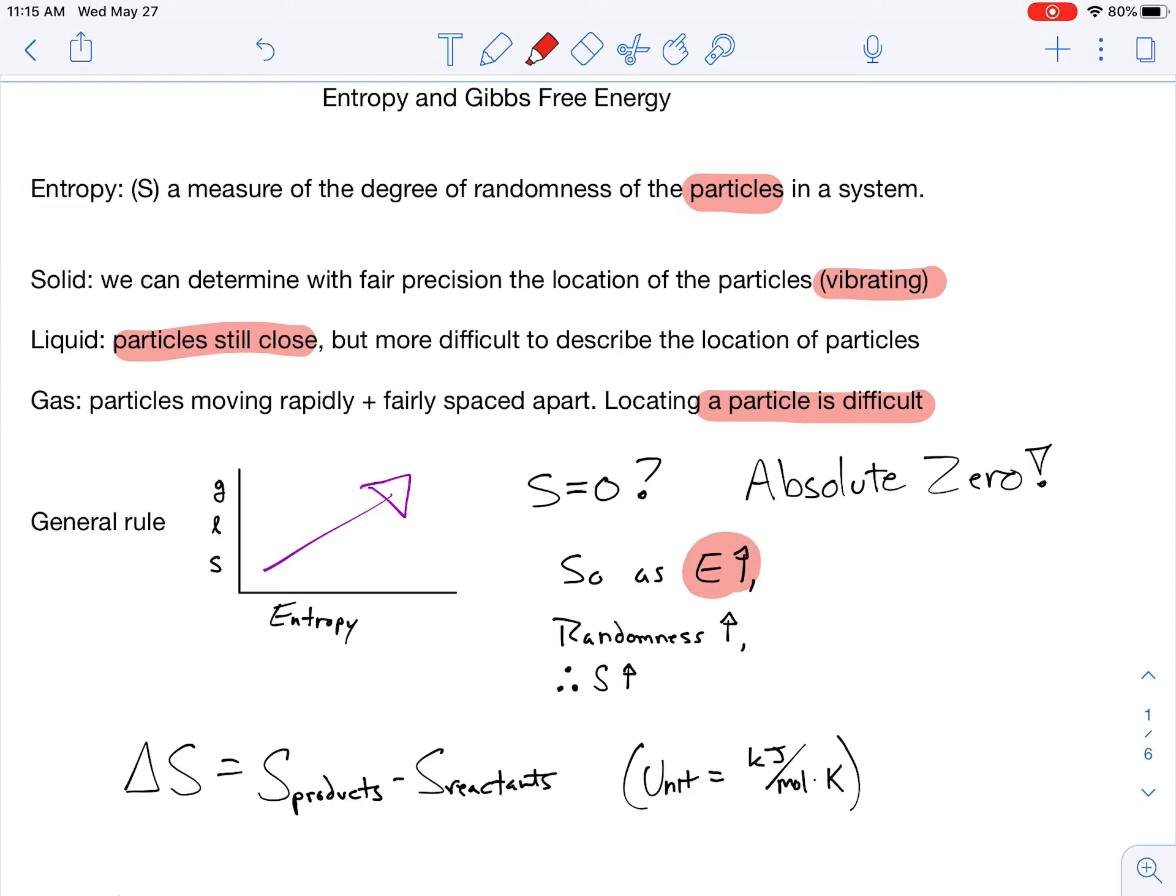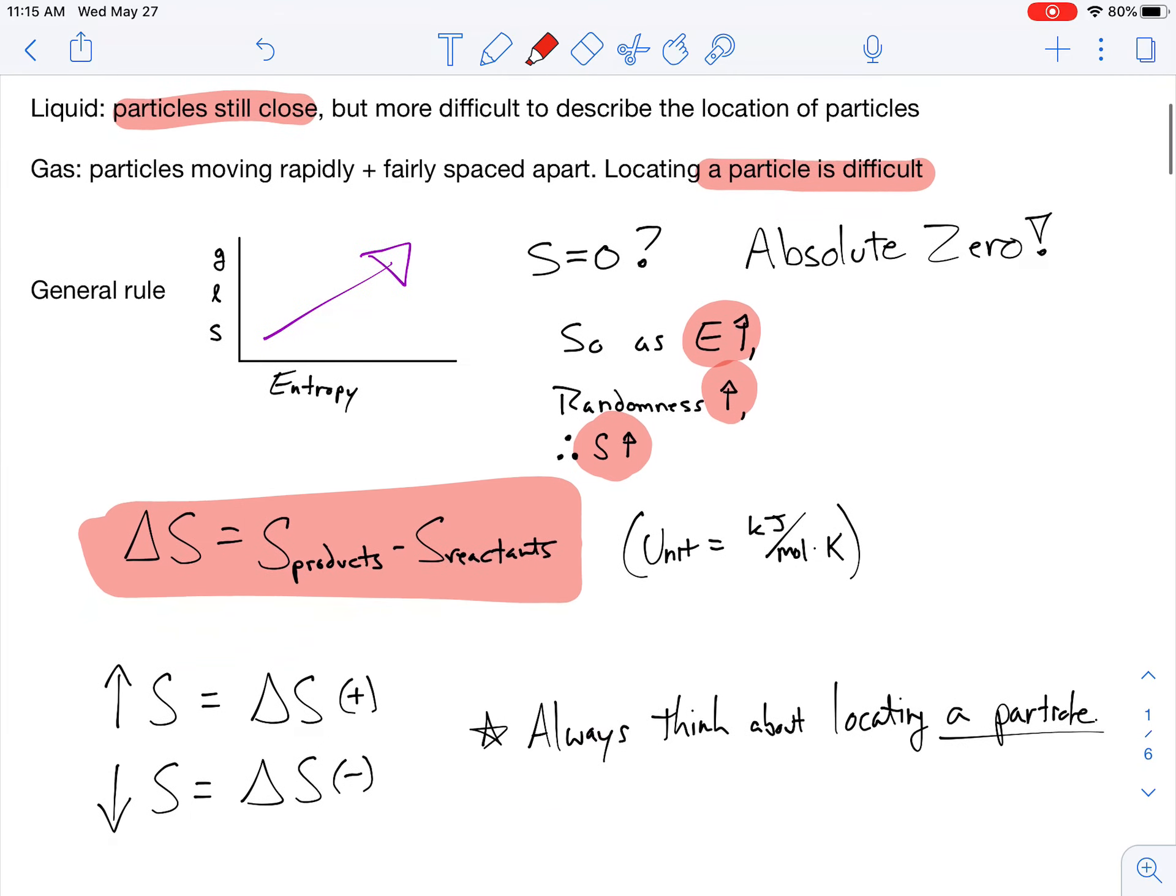From that information, we should get that as energy increases, randomness increases, therefore entropy increases. We have a formula. It's the entropy of your products minus the entropy of reactants. It's very similar to Hess's law, so not that difficult to memorize.